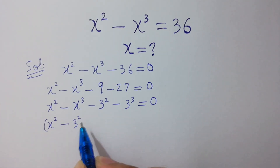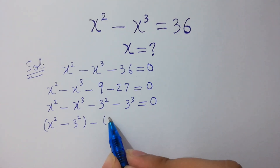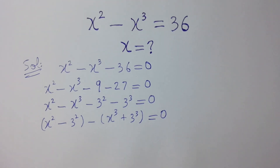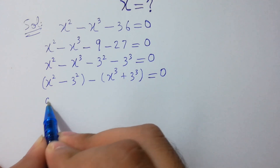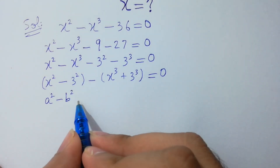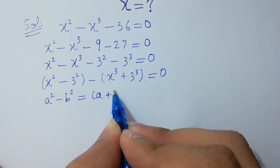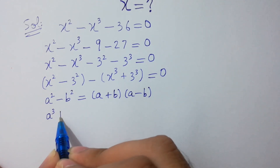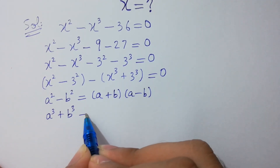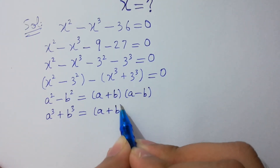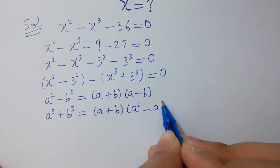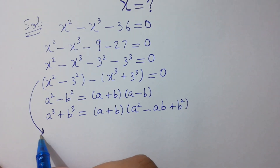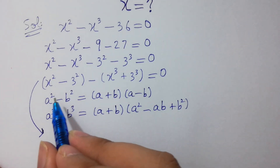x squared minus 3 squared, minus will be common, x cubed plus 3 cubed, equals 0. As we know, a squared minus b squared equals (a+b)(a−b), and a cubed plus b cubed equals (a+b)(a squared minus ab plus b squared). So this equation becomes: x squared minus 3 squared, factored as (x+3)(x−3),